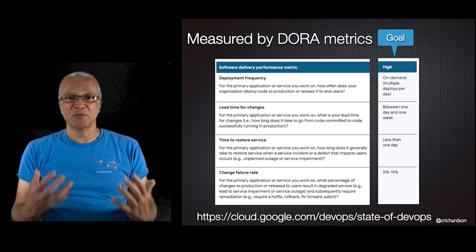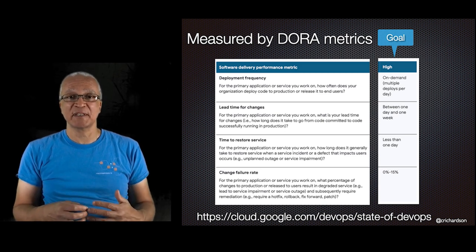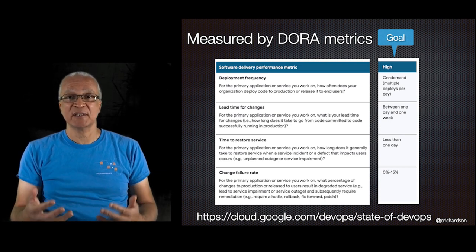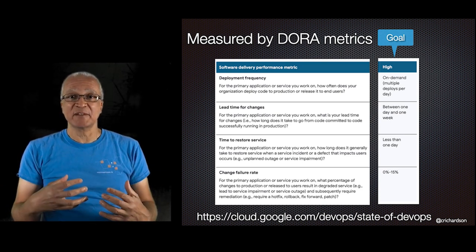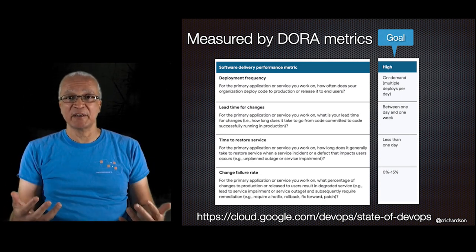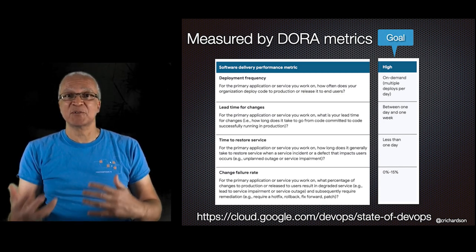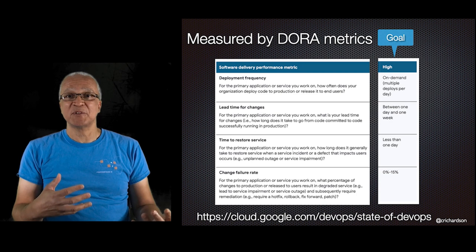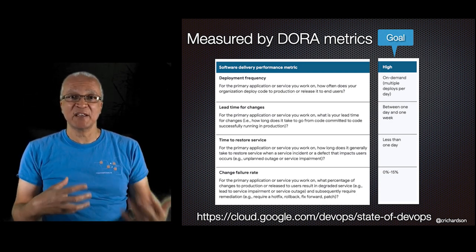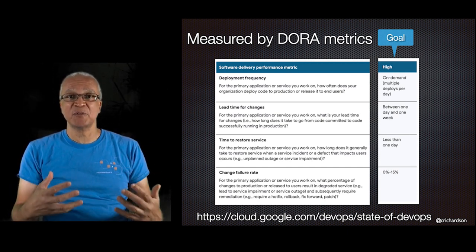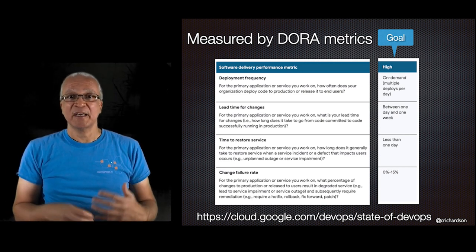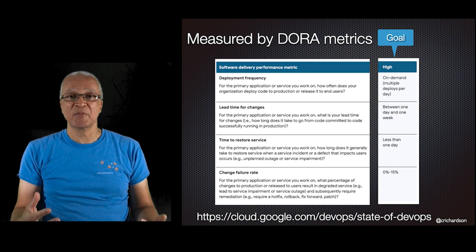The first is deployment frequency — the rate at which changes are deployed to production; this needs to be high. The second is lead time, the time from commit to deploy, which must be low. The third is time to restore service — you need to quickly recover from outages. The fourth is change failure rate — how often a change causes an outage; this must be low. In other words, you need to move fast and not break things.